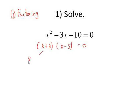I break this into two equations: x plus 2 equals 0, or x minus 5 equals 0. Solve the first by subtracting 2, solve the second by adding 5. And so we find that our two solutions are negative 2 and 5.